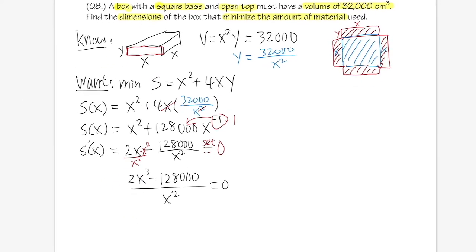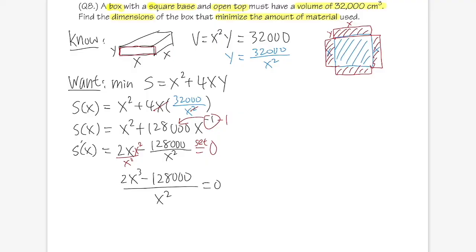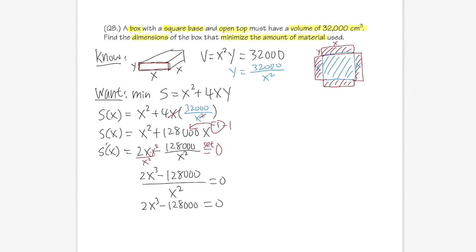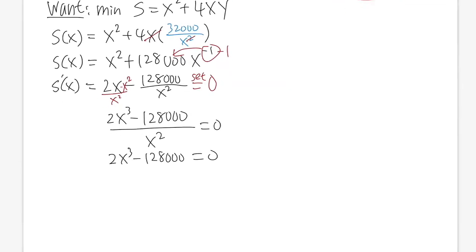To make that equal to zero, we just have to make sure the top is equal to zero. So 2x³ minus 128,000 is equal to zero. Meaning we'll just have to get—let me just zoom in like this.